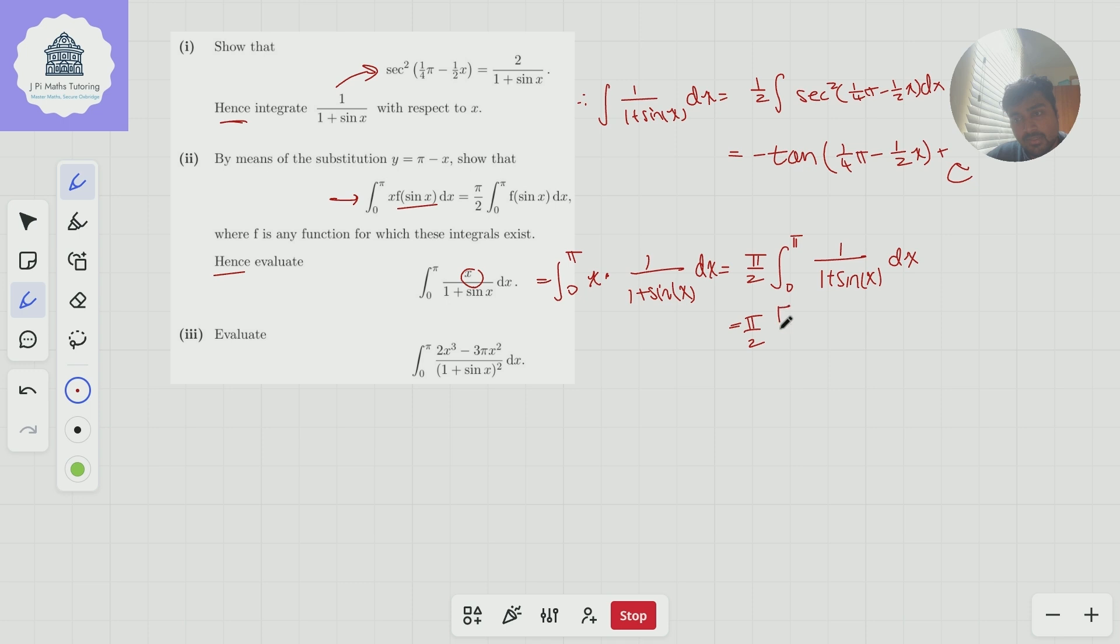So this is going to be pi over two times minus tan of a quarter pi minus a half x, with the limits being π and zero. And if I remember correctly, when you go away and evaluate this, you get the number π.